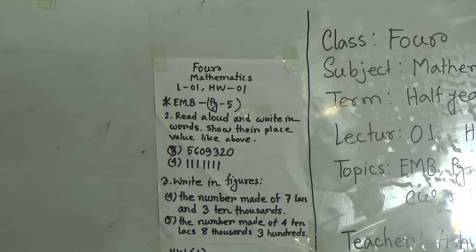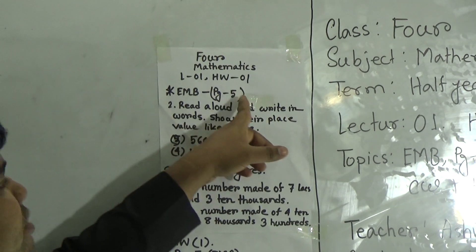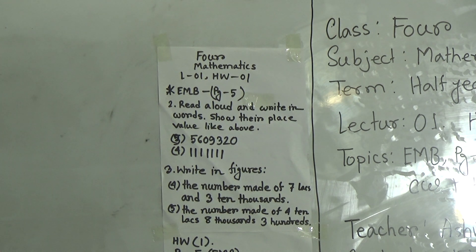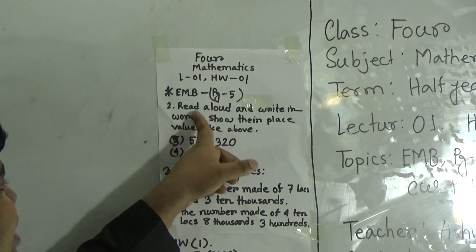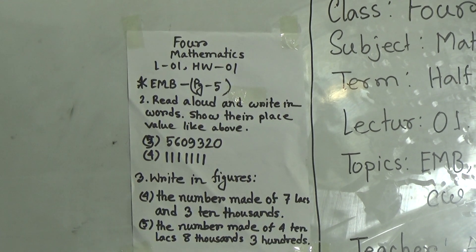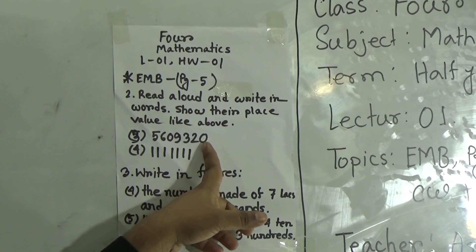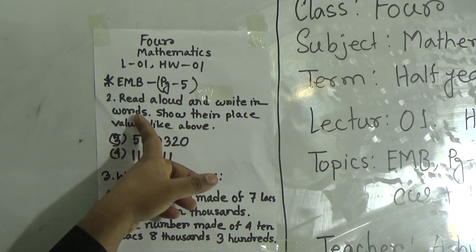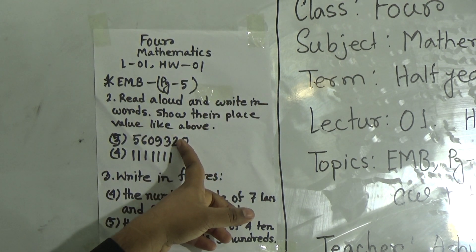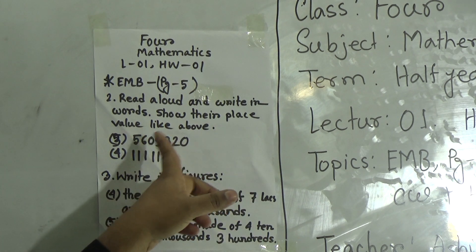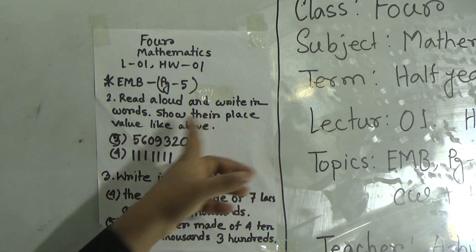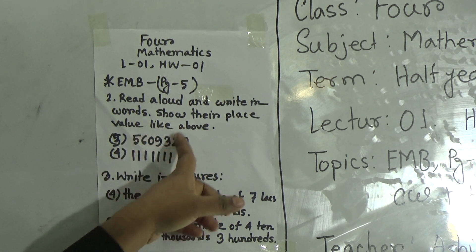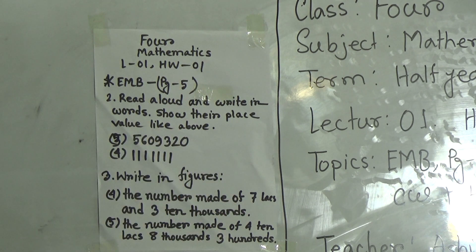So my dear student, please open your math book, page number 5 of your elementary mathematics book. Two number question — at first, you read the question. Read aloud. That means we need to read the number and write it in words. Here the number is given in numerals. We need to write the number in words. Then show their place value like above — that means we need to write the place value of this number.